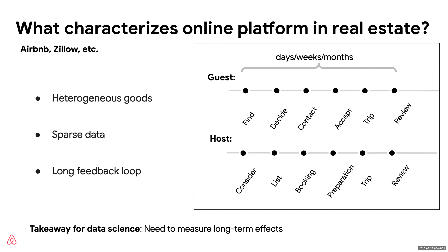Data is pretty sparse. Some people buy a lot of houses, but the majority buy houses once or twice in their lifetime. With respect to Airbnb, guests stay in listings maybe once or twice a year. So we don't have a ton of data coming in.